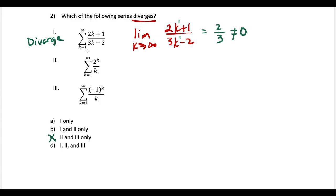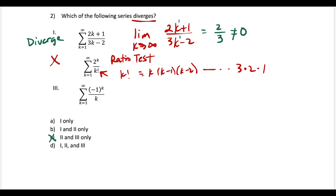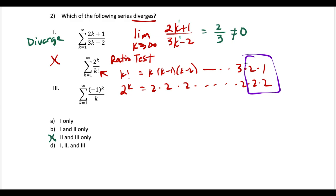For the second series, you could do the ratio test to show it converges, but since it's multiple choice, just be mindful that k factorial increases at a much faster rate than 2 to the k power. Because k factorial is k times k−1 times k−2 down to 1, while 2 to the k is just a string of twos. Once we get past two, k factorial has 3 versus 2, then 4 versus 2, and so on — factorials always beat exponentials. So Roman numeral II converges and is out.